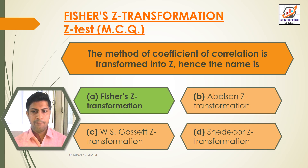Here we have the answer: Option A. Fisher's Z-Transformation. The method of coefficient of correlation is transformed into Z; hence the name is Fisher's Z-Transformation.